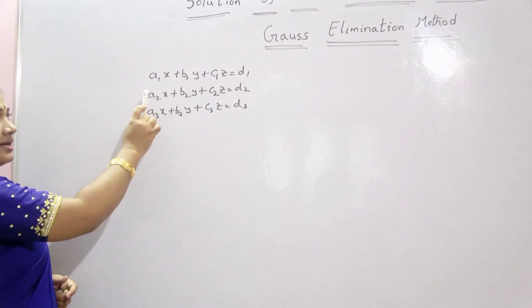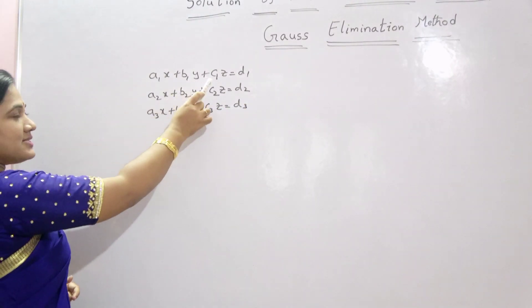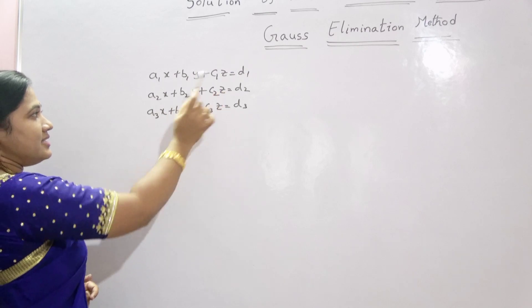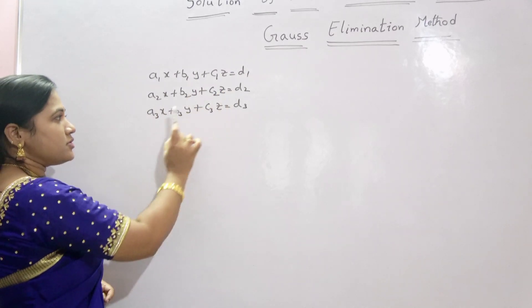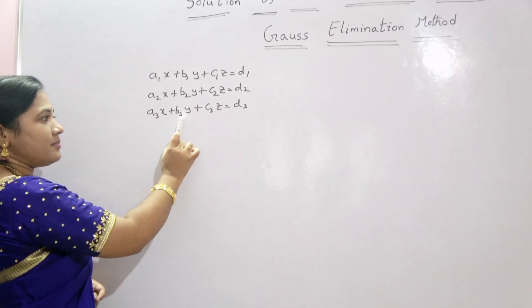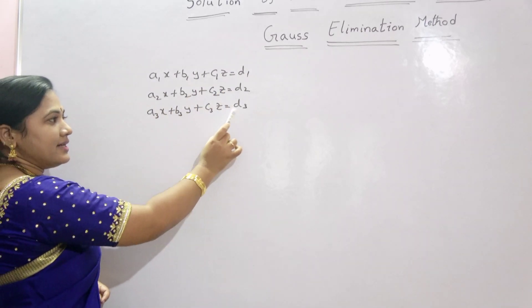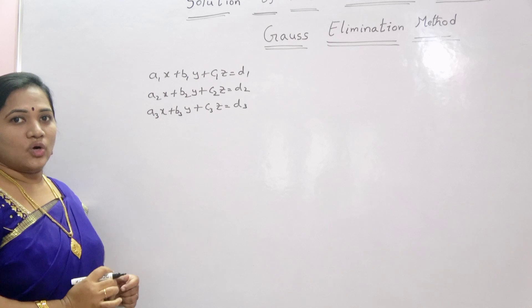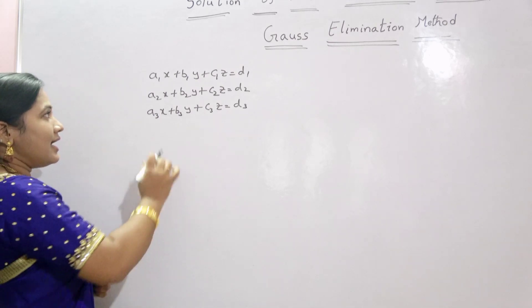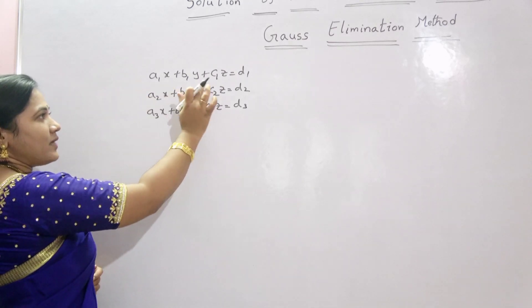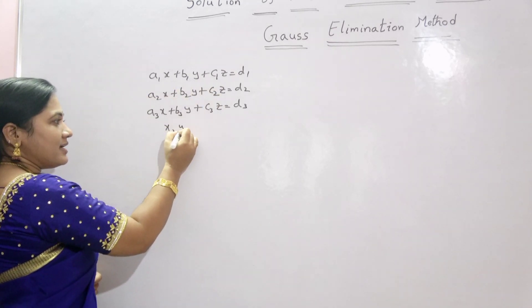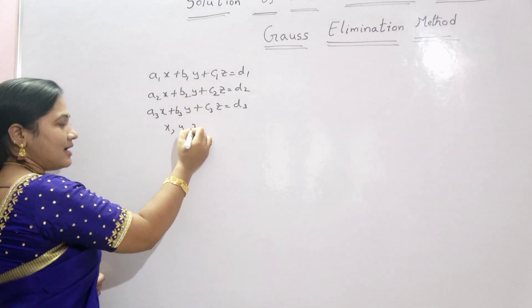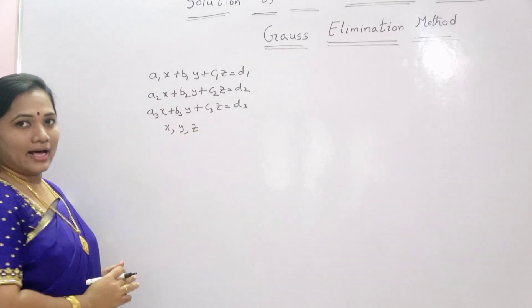Where a1, b1, c1, d1, a2, b2, c2, d2, a3, b3, c3, d3 are the constants, and x, y, z are unknowns.